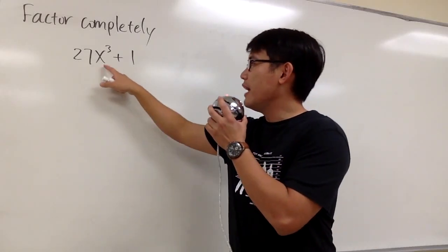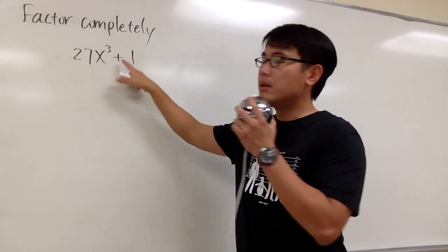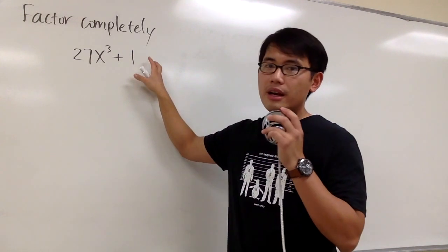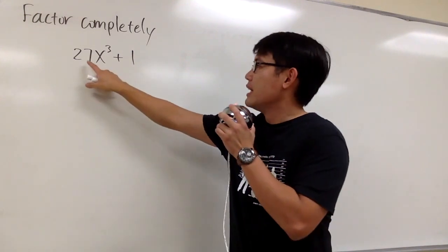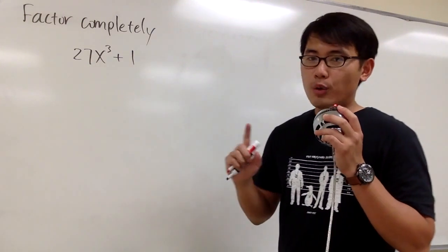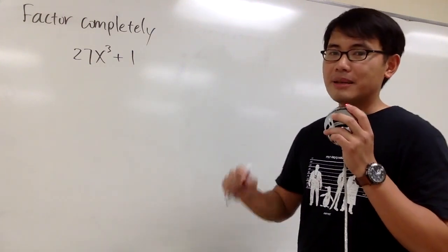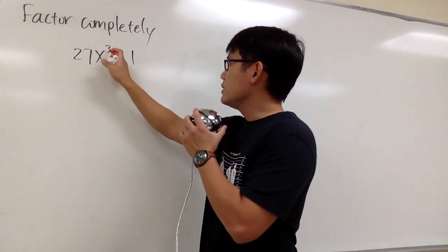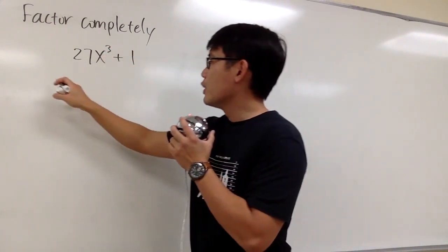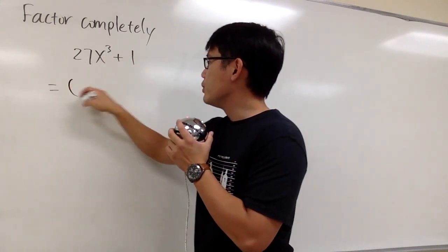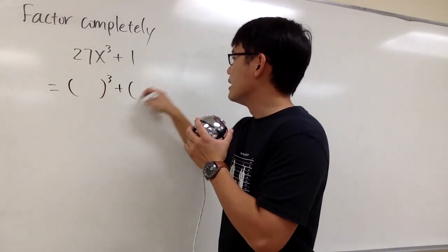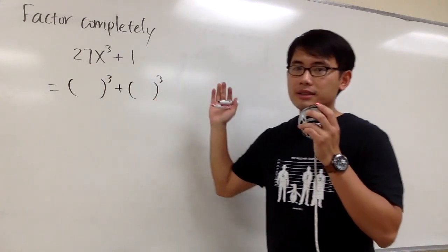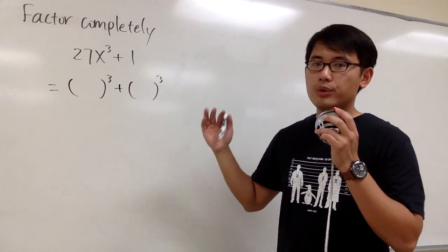To factor this out, we have 27x to the third power plus 1. We see that there's no common factor, and then we notice that there are two terms. So we are going to factor this by using a formula. Because this is the third power, we are going to put this into something to the third power plus something to the third power — this is going to be the sum of two cubes.